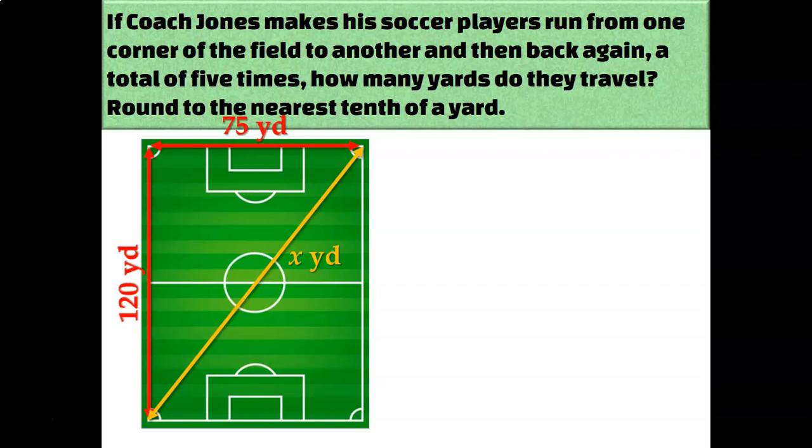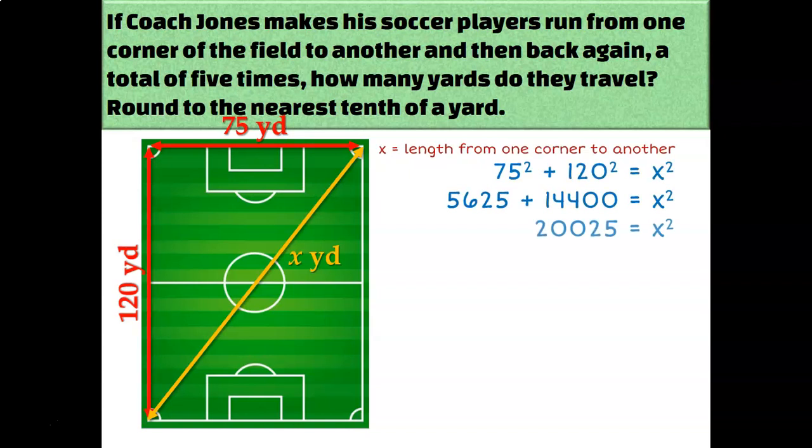120 and 75 are the legs of the triangle and X is the hypotenuse. So I can figure out what X is by using the Pythagorean theorem. X is approximately 141.5 yards.